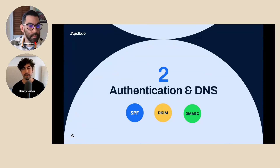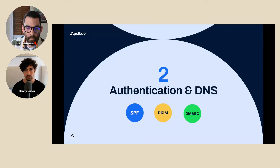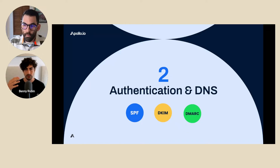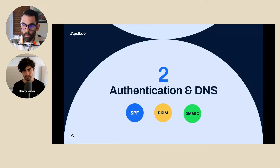Let's talk about authentication and DNS. For all intents and purposes, this comes down to three things: SPF, DMARC, and DKIM. Those are text entries that sit in the back end of your GoDaddy, Namecheap, Google Domains, or wherever you house your domain records.